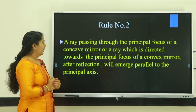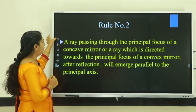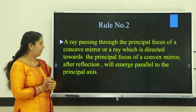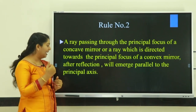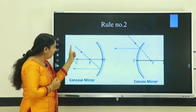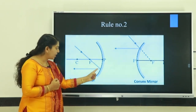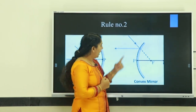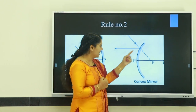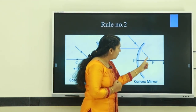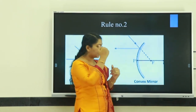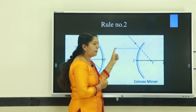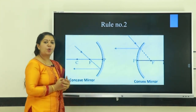Rule number two: a ray passing through the principal focus of a concave mirror, or a ray directed towards the principal focus of a convex mirror, after reflection will emerge parallel to the principal axis. That means a ray which passes through focus — after reflection, the reflected ray will be parallel to the principal axis. For a convex mirror, if the extended incident ray passes through point F, the reflected ray will be parallel to the principal axis.